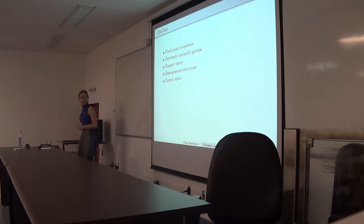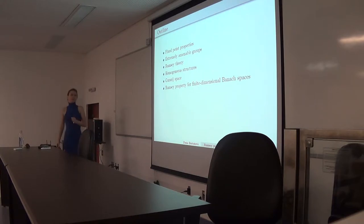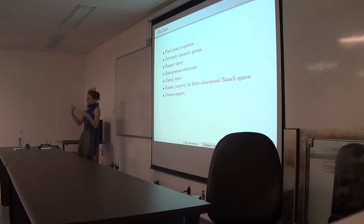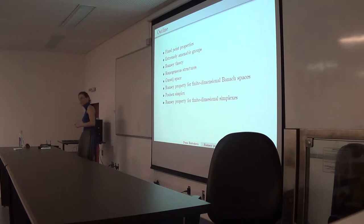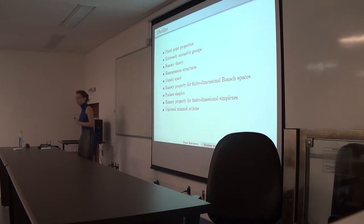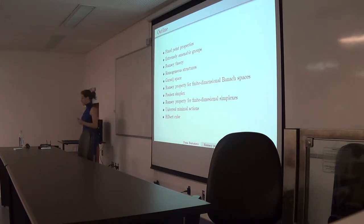One example is the Gurari space, which is a Banach space, and there we have a Ramsey or approximate Ramsey property for finite-dimensional Banach spaces. In a dual sense, the Poulsen simplex is a dual object to the Gurari space, and there we need an approximate Ramsey property for finite-dimensional simplices. We will also compute the universal minimal action of the group of fine homeomorphisms of the Poulsen simplex, and look into the most important open question in this area, about the Hilbert cube.